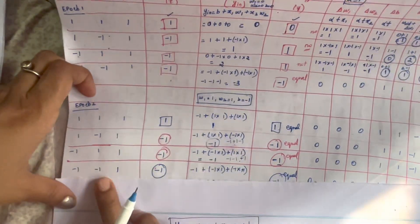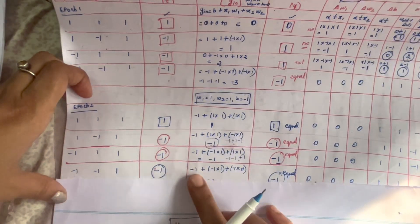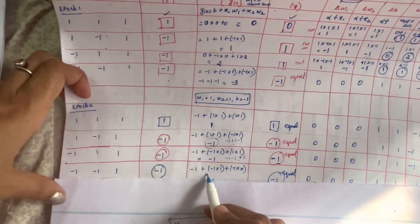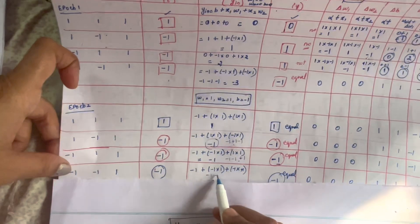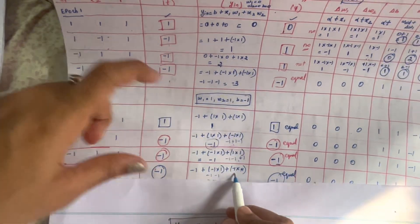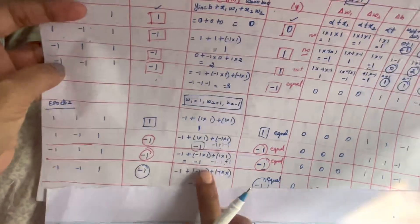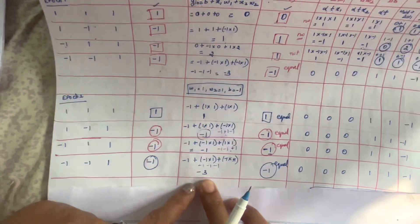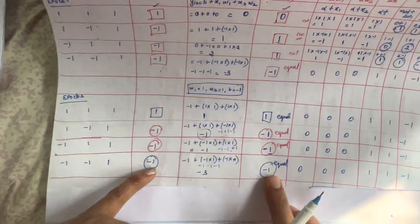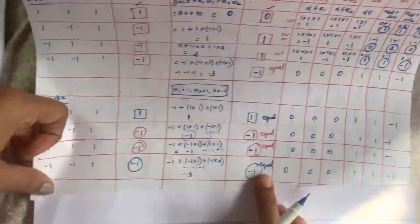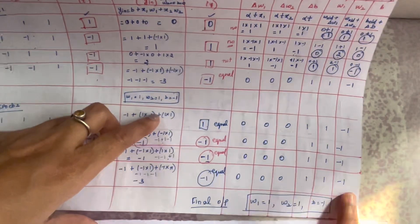Fourth set of inputs in approach 2: x1=-1, x2=-1, bias=1, target=-1. y_in = -1 + (-1)*1 + (-1)*1 = -1 - 1 - 1 = -3. Since y_in = -3 < 0, y = -1. Comparing y=-1 and t=-1, they are equal, no change in weights. Weight changes are 0,0,0 and new weights are w1=1, w2=1, b=-1.